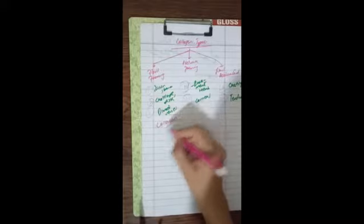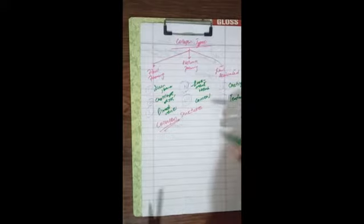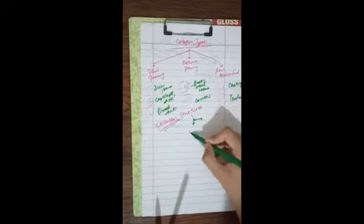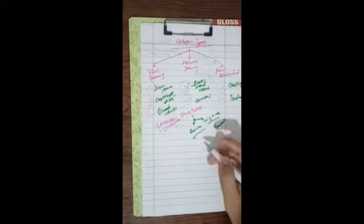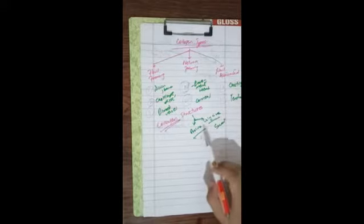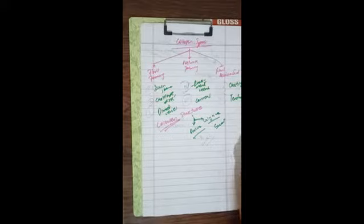Collagen structure is rich in two amino acids: proline and glycine. The amino acid sequence is rich in proline and glycine. Glycine is small and is present at every third position. This structure is different from the alpha helix — do not mix them. Proline helps form the structure.